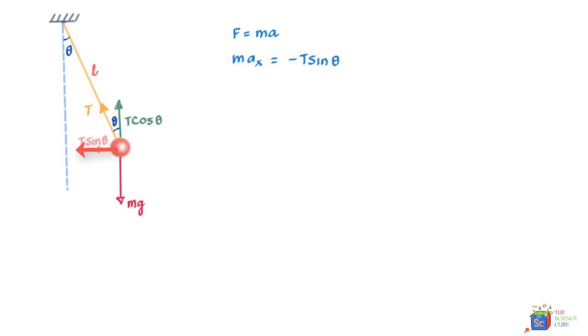This should equal -T sin theta, and we've put the minus sign because it's a restoring force bringing it back towards the center. We also know that sin theta is nothing but X/L, where X = 0 is at the center and this is position X. So this equals -T*X/L, where L is the length of the pendulum. Let's say this is equation number 1.